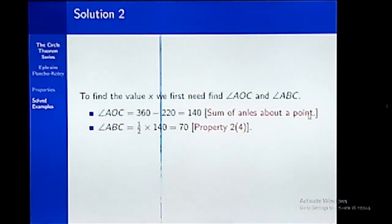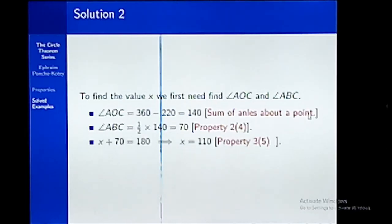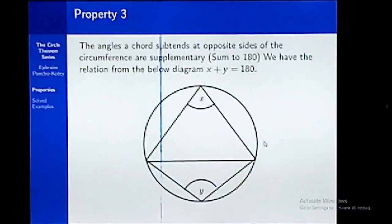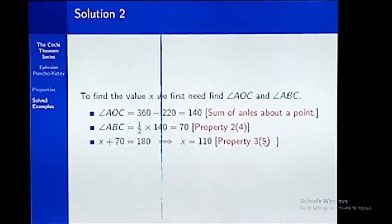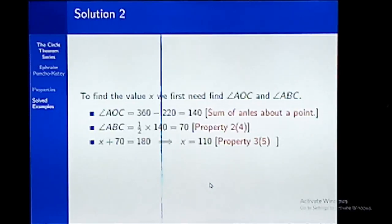Now we need to find angle x. From property 3, if a chord subtends angles at opposite sides of the circumference, they are supplementary — meaning their sum is 180 degrees. Applying this property, the sum of x and 70 gives us 180, which means x is 110 degrees. From this example too, we can see that we applied some properties that were not among the four properties we discussed earlier.